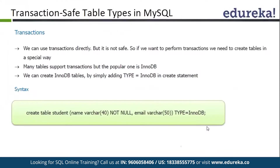We use InnoDB tables. From MySQL version 5.6, the default table type is chosen as InnoDB. Before that, the default table type was MyISAM — we had to manually alter our table to make it InnoDB. If we are going to do any kind of transactions or apply some kind of constraints on our database like foreign key constraints, we are going to use InnoDB tables. We are not going to use MyISAM tables.